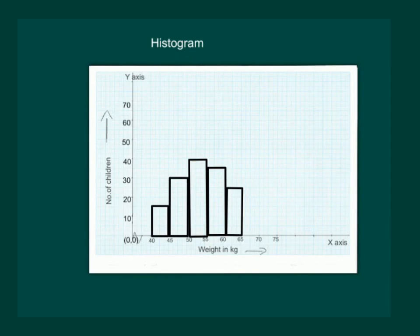Finally, after marking for all the values, we get this graph which is called a histogram. Here we can see that there are no gaps between bars because there were no gaps between the intervals in our data. Also from the graph, we can see that maximum number of children that is 40 lie in the weight range of 50 to 55 kg. While the minimum number of children that is 15 lie in the weight range of 40 to 45 kg.